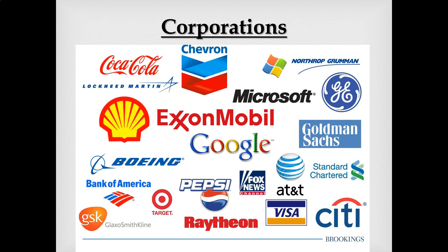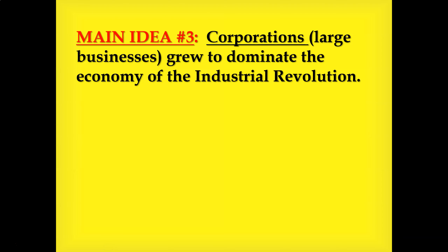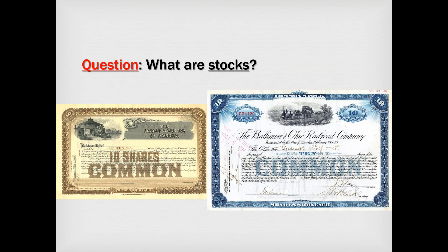This leads us into our next big topic: corporations. The word corporation is probably a little hazy for most of us — we know they're businesses, but we're not sure exactly what makes a corporation a corporation. All these companies shown here are examples of corporations. To understand a corporation, you have to understand what stocks are. Stocks are basically partial ownership in a company.